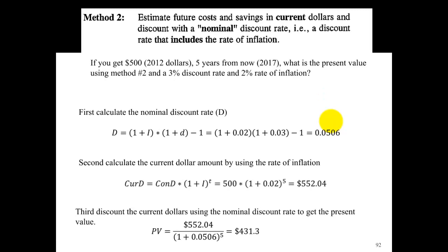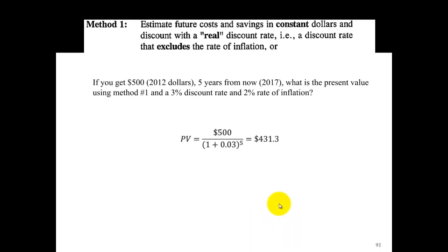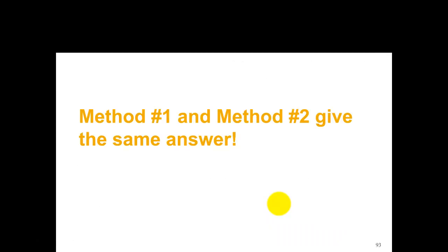Now let's try method two. First, calculate the nominal discount rate using the formula. Second, calculate the current dollar amount: five hundred of today's dollars equals five hundred fifty-two dollars five years from now using a two percent inflation rate, because five hundred dollars now has the same purchasing power as five hundred fifty-two dollars in five years. Then discount that five hundred fifty-two dollars using the nominal discount rate over five years, giving four hundred thirty-one point three dollars — exactly the same answer as method one. Both methods always give the same result; the easier one to use depends on the situation.